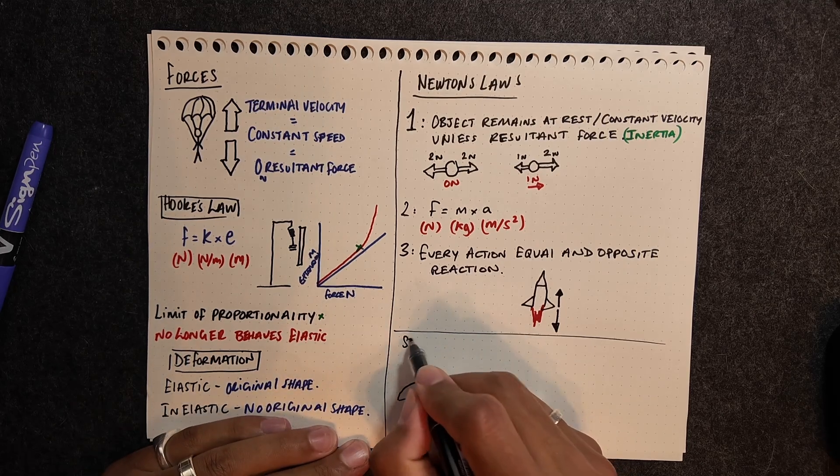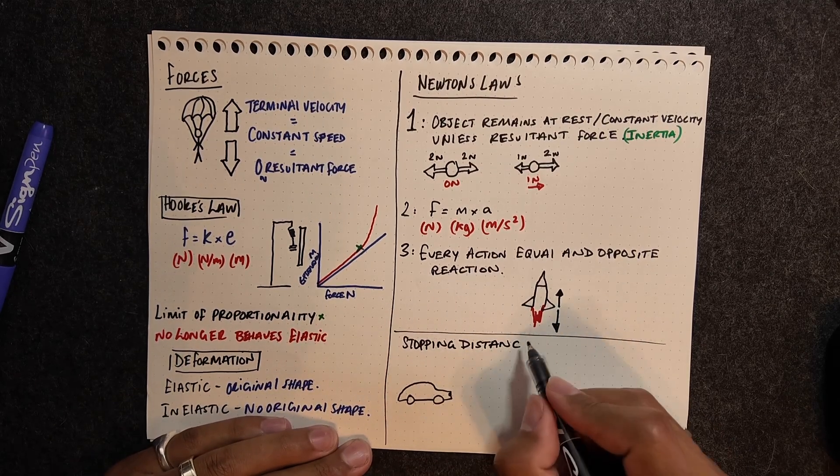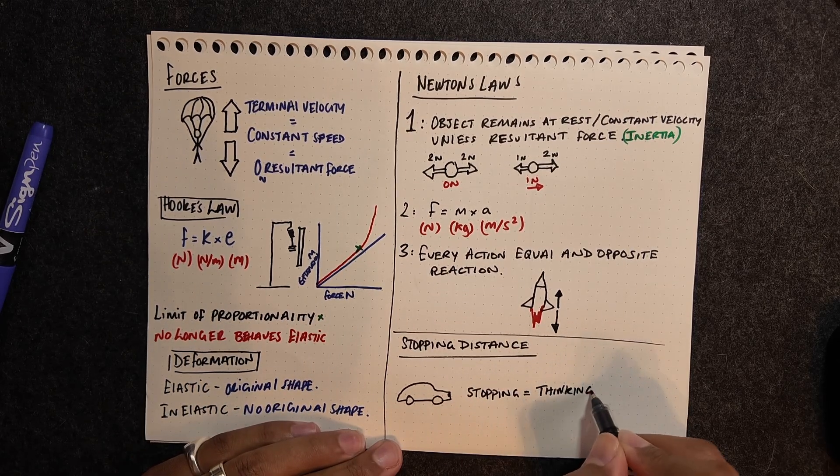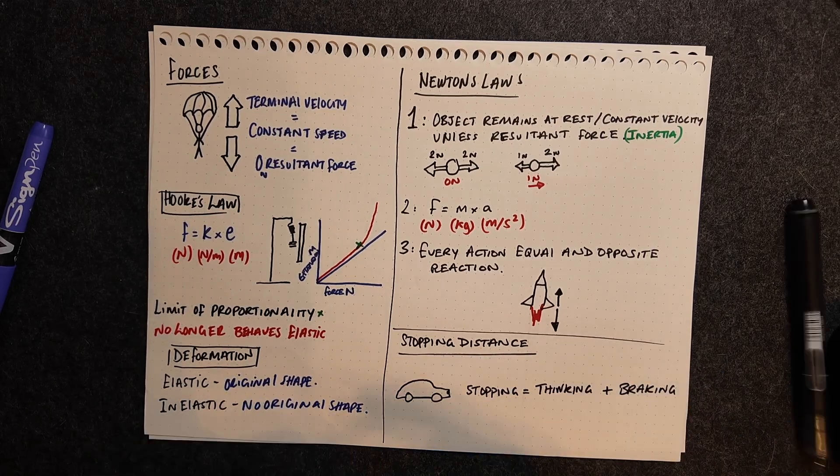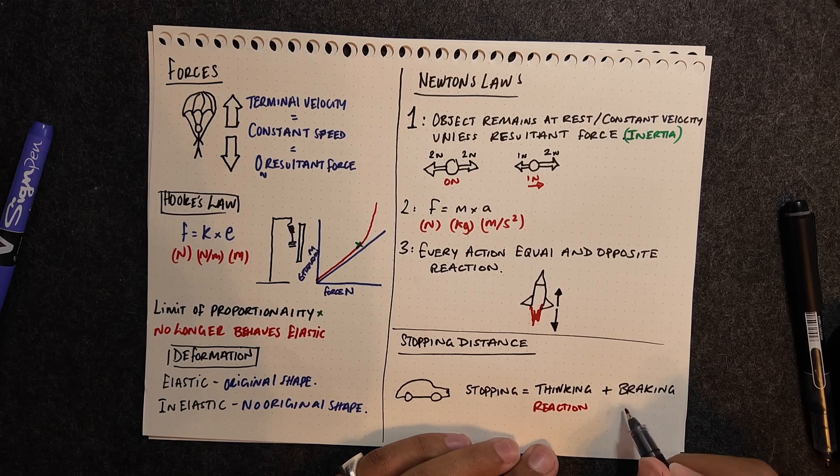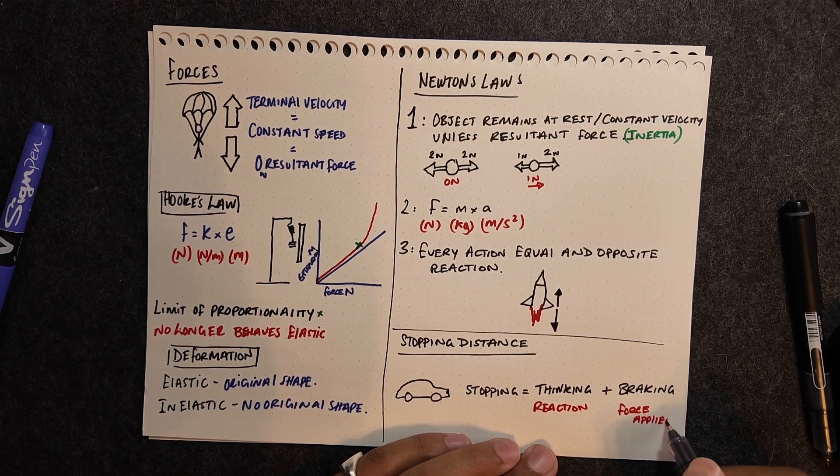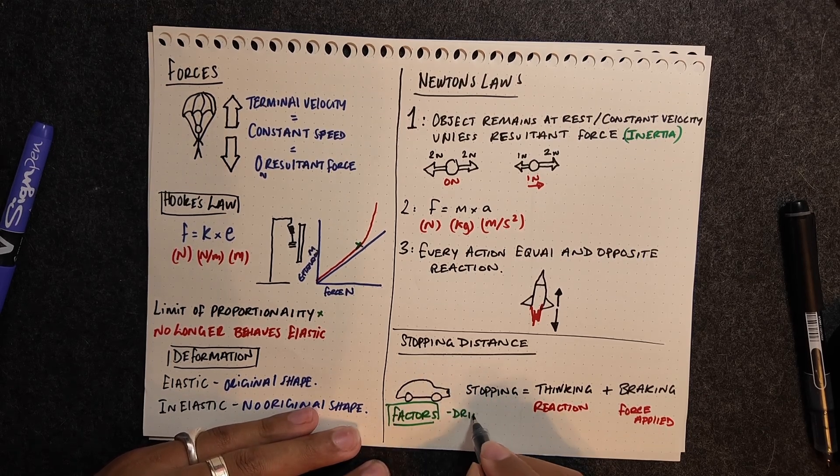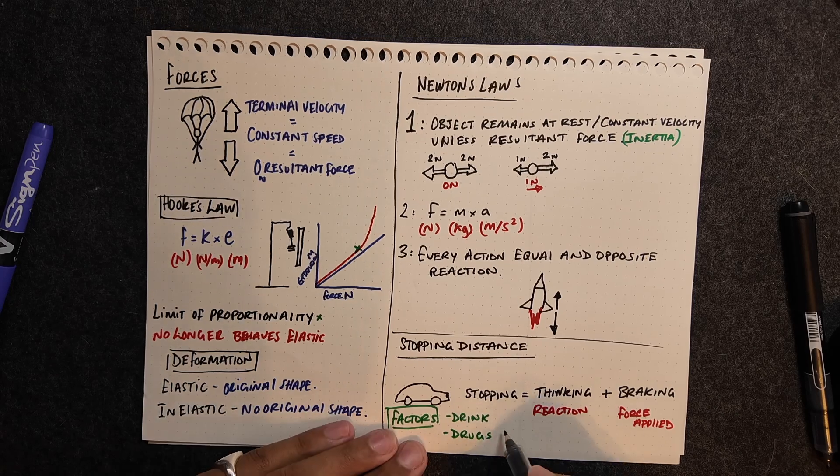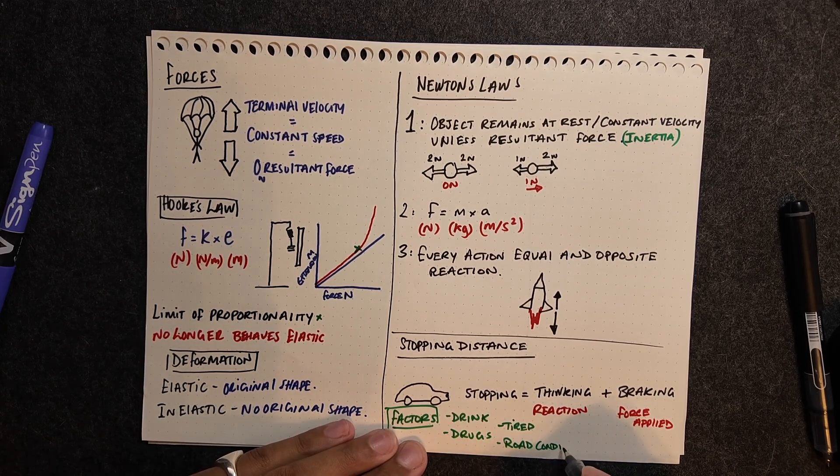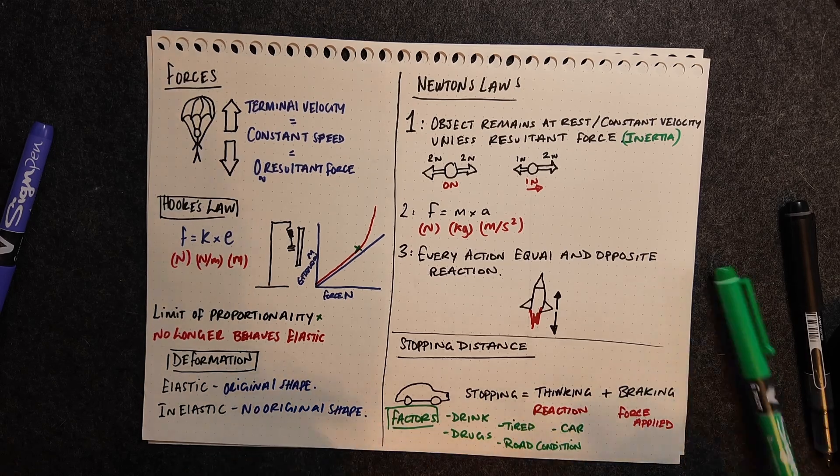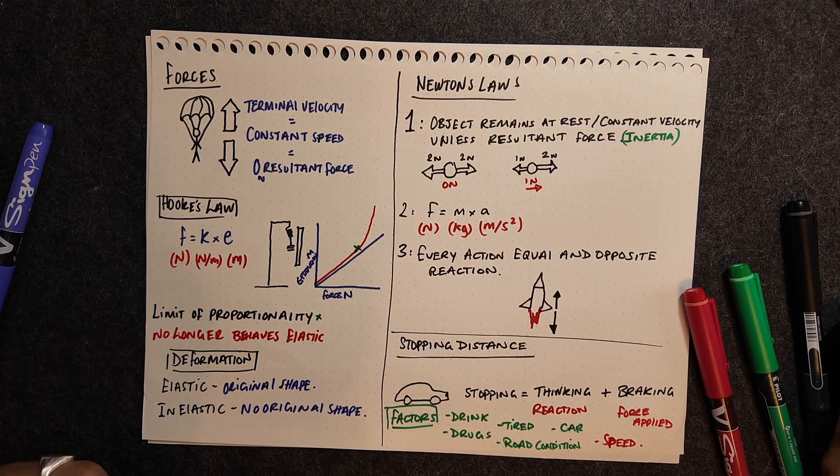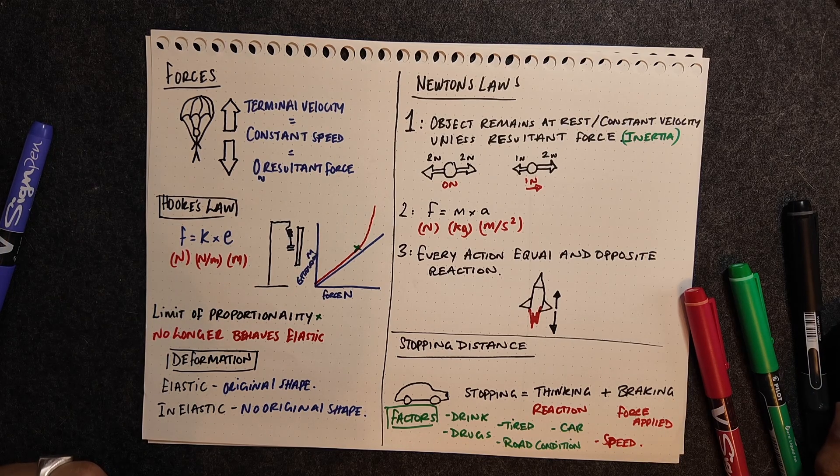A simple section here is talking about stopping distances in cars. You need to be aware of the components for stopping distance. Stopping distance is made up of the thinking distance and the braking distance. Thinking distance is just how far a vehicle travels whilst the driver is reacting, so it's related to reaction time. Whereas braking distance is how far the car travels once the brakes have actually been applied. There are some different factors here which will affect different things. Drinking, drugs, whether you're tired, these are all going to affect the reaction time, so the thinking distance. But the condition of the car, condition of the road, will affect braking distance. Speed will affect both of those.